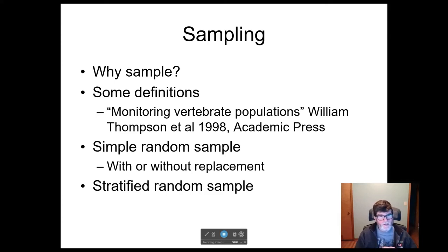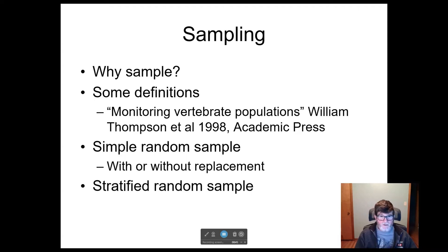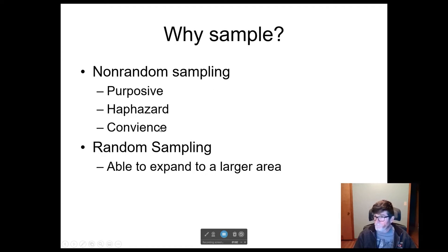Why sample? Why not just count everything? The main reason we sample is because it's typically much too costly in terms of time and money to take a complete census of some population we're interested in. In this set of short videos, I'll talk about some definitions from 'Monitoring Vertebrate Populations' by William Thompson — a great basic text on estimating abundance — and then about simple random samples with or without replacement, and stratified random samples, which accommodate heterogeneity across our sampled elements.